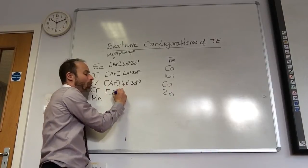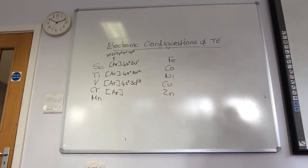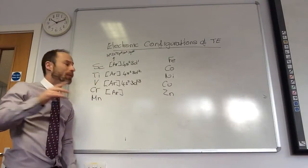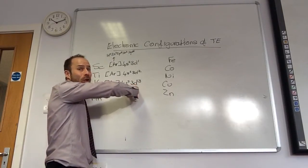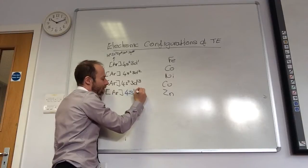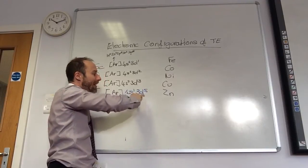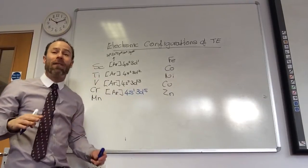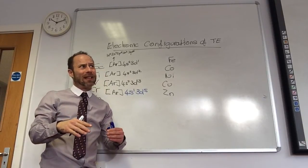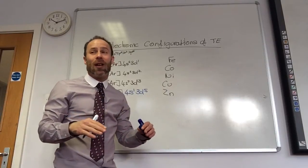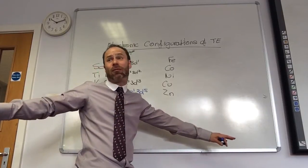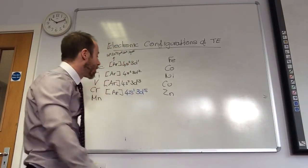Chromium is where you've got to be careful, so you may want to highlight it. You'd expect chromium to be 4S2, 3D4. However, they actually do something different. There are six electrons in total, and half-filled subshells are quite stable. The 4S and the 3D are pretty similar in energy, so the electrons spread evenly between them because electrons repel each other.